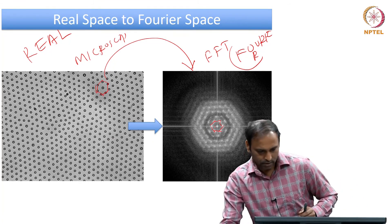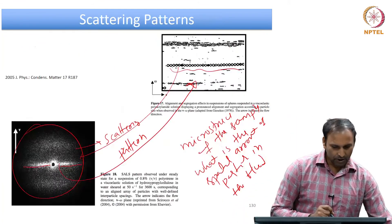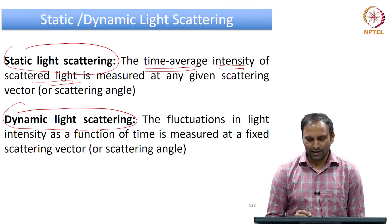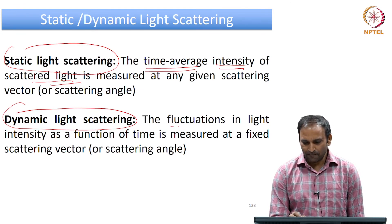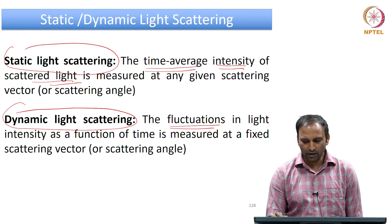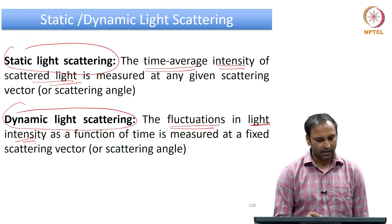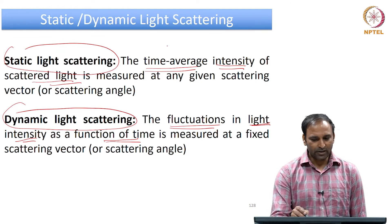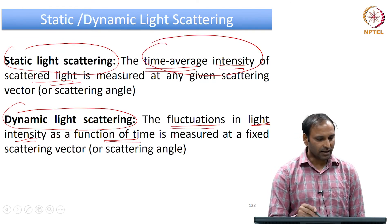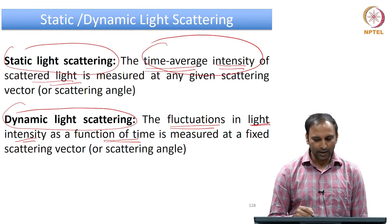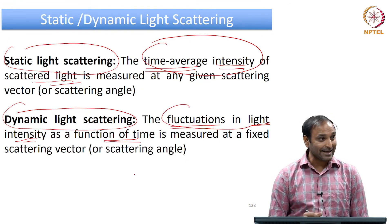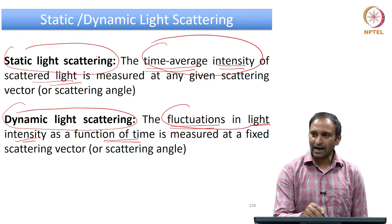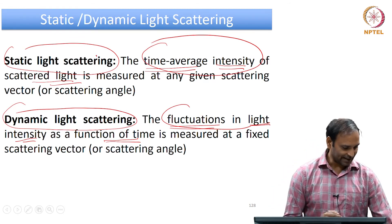That is something about static light scattering. In dynamic light scattering, what you measure is fluctuations in the light intensity as a function of time. In one case you measure the time-average intensity - that is static light scattering. In dynamic light scattering, what you measure is the fluctuation in the light intensity itself as a function of time. That is the difference between static and dynamic light scattering.